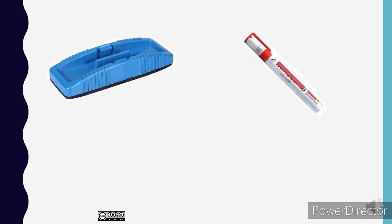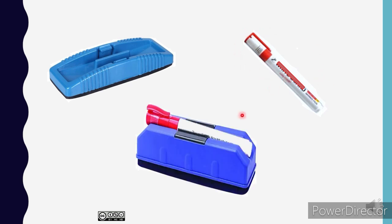Always remember that if you want to add anything, there should be an empty place for adding another compound. As you see, a whiteboard duster has an empty gap to hold up a pen. And when you put it together, it turns into a single product.